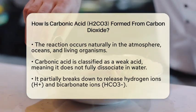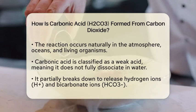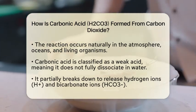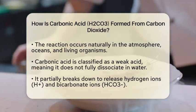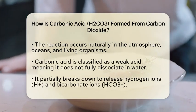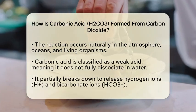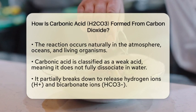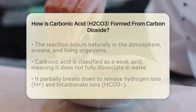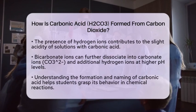Once carbonic acid is formed, it is classified as a weak acid. This means it does not completely break apart in water. Instead, it partially dissociates to release hydrogen ions and bicarbonate ions. This release of hydrogen ions is what makes solutions containing carbonic acid slightly acidic.